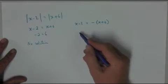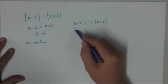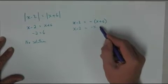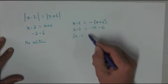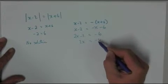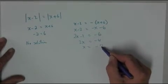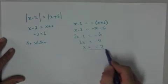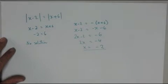And in this situation, we can rearrange it to get that x-2 is equal to -x-6, 2x-2 is equal to -6, 2x is equal to -4, and x is equal to -2. So our only solution to this is x is equal to -2.